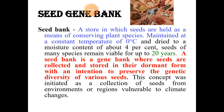The next ex-situ conservation method is the seed bank or seed gene bank. It refers to a store in which seeds of endangered plants are conserved at freezing temperatures. These seeds remain viable for usage up to 20 years later. A seed gene bank is a place where seeds are collected and stored in dormant form at freezing temperatures to help preserve the genetic diversity of various seeds.